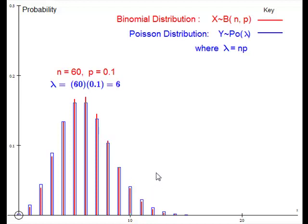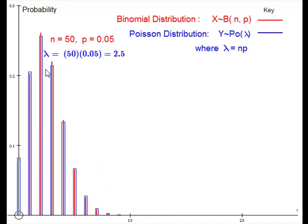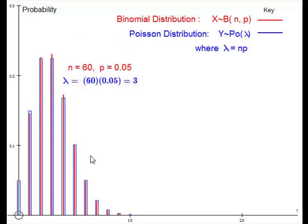Let us try reducing p to 0.05 with n equal to 50. Very good. And it just gets better as n increases to n equals 60. And so on.